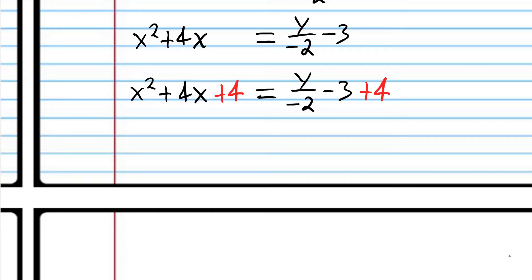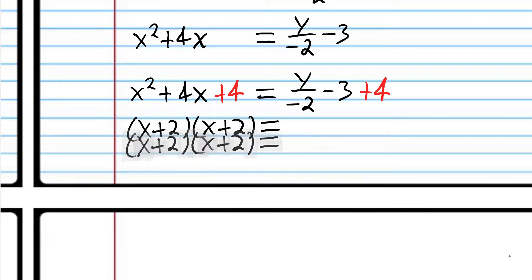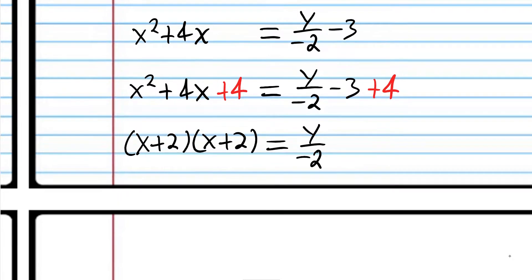That was the whole point — if you factor that quadratic expression, what two numbers multiply to 4 and add up to 4? The only option is 2 and 2. So we just factored that. Negative 3 plus 4 is 1. We're using a lot of things we learned in previous classes — that's just how math works, it builds and builds.